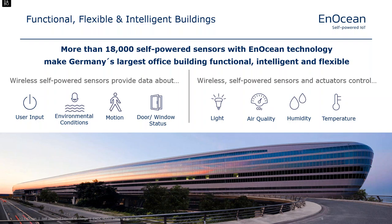What type of sensor data is collected in such a building? First, we collect user input like signals from light switches, temperature dials, windows and doors. We measure environmental conditions such as temperature, humidity and light level. We detect motion — meaning is somebody moving around an area, is an office space occupied. We use this information to drive self-powered controls for light, air quality, heating, ventilation, humidity and temperature, and to gain insight into building utilization.